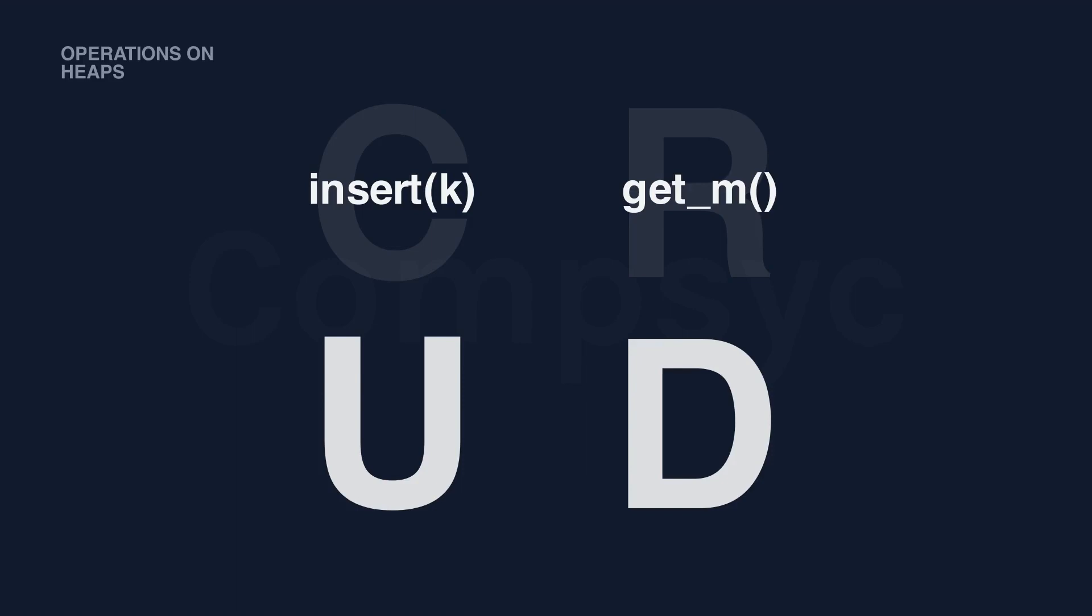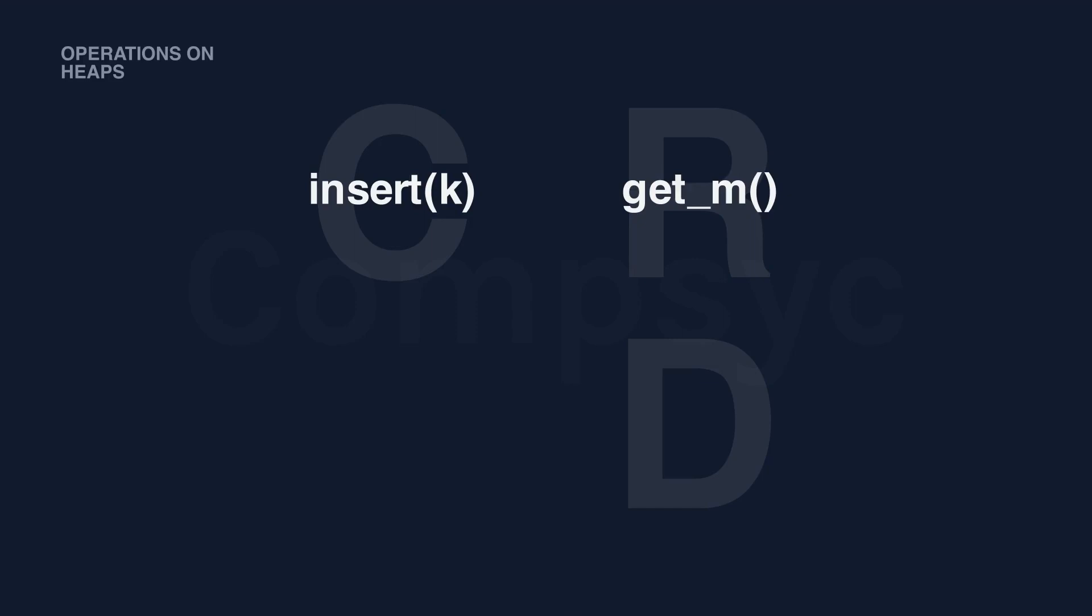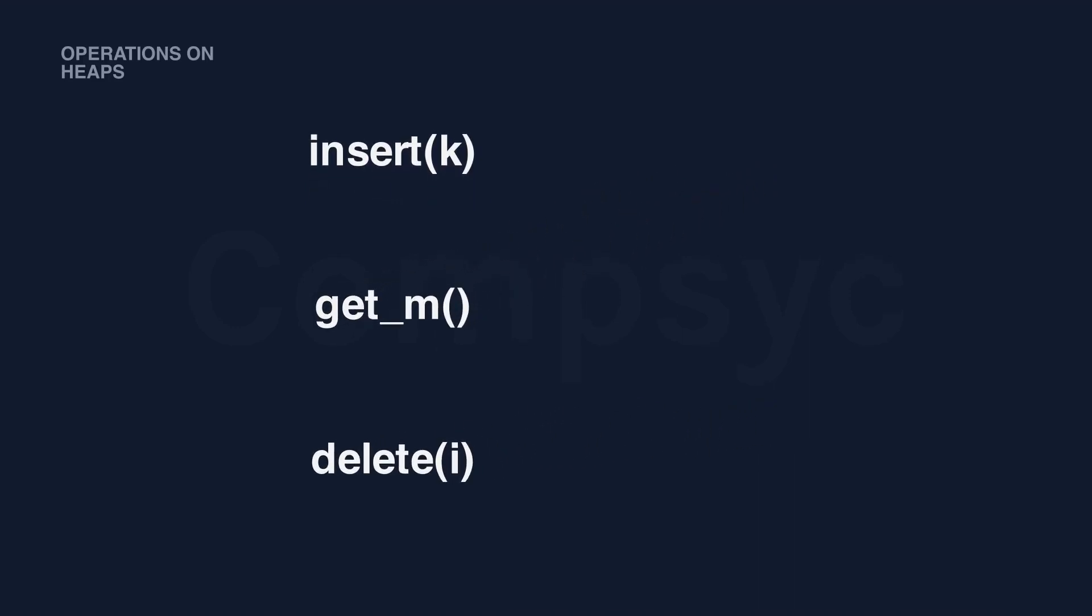For update, it's not so common so I won't talk about it this time. For delete, the operation is to delete a value whose index is i. Remember we implement heap in an array. Other than these operations, there are three heap-specific operations. The first one is called extract m, extract max or min. It's almost the same with get m. It not only gets the max or min value, but also removes the top value from the tree. Therefore, it's more complicated than get m since it has to reorganize the rest of the tree to make it complete and good again.